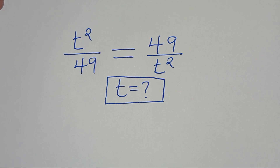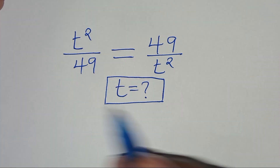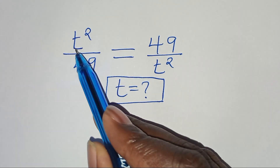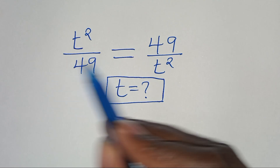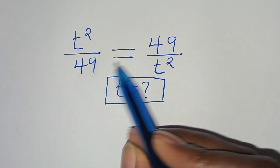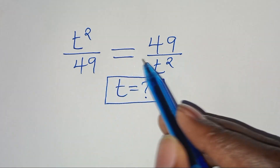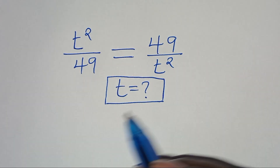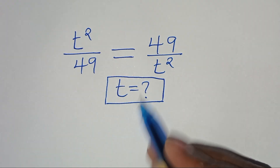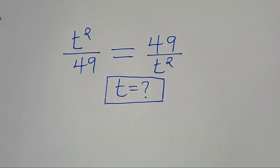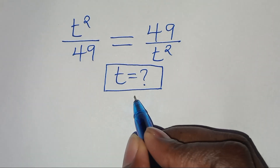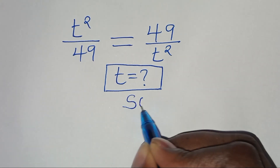Hello everyone, you're welcome to solve this nice algebra problem: t squared divided by 49 is equal to 49 over t squared. What are the values of t? Let's provide a solution.